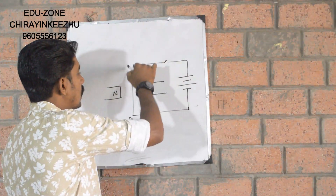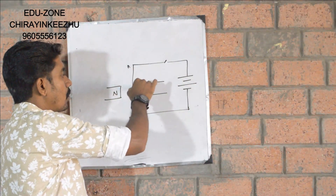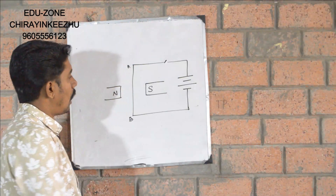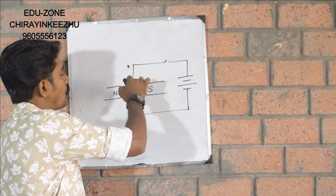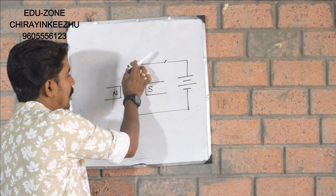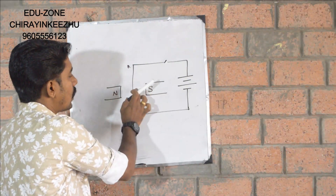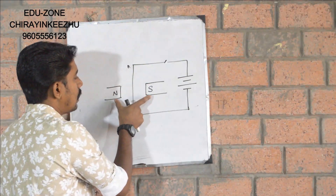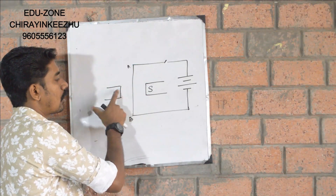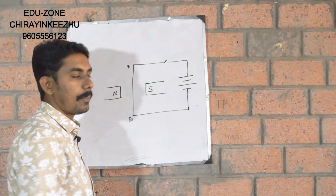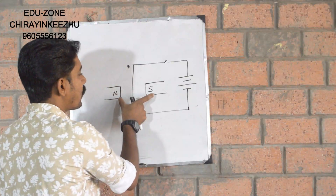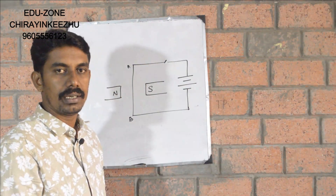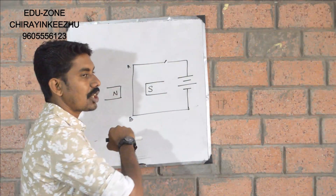I have a bar magnet with a magnetic field form. If you can form a magnetic field, the magnetic field is the most magnetic field. The two magnetic fields are north and south. If you can form a magnetic field, there are many magnetic fields.